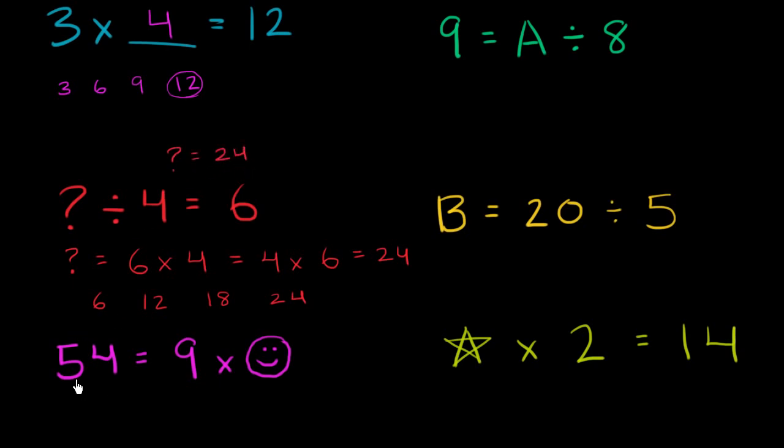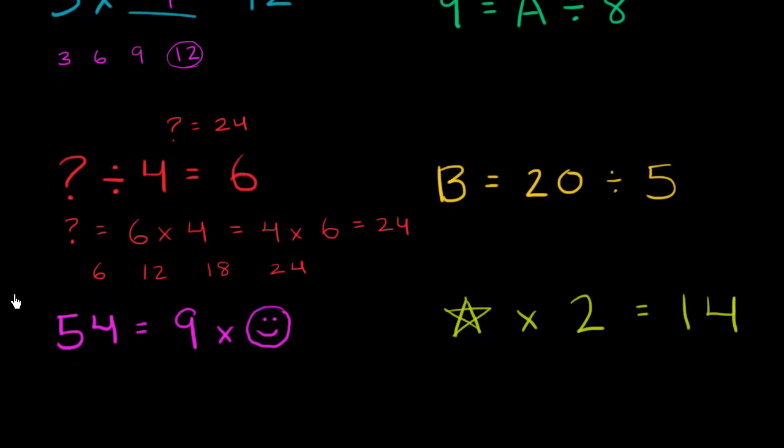Now here I have 54 is equal to 9 times smiley face. So 9 times what is equal to 54? Well, let's just skip count with 9 and try to figure that out. 9 times 1 is 9, 9 times 2 is 18, 9 times 3 is 27. Notice I'm just adding 9 each time. 9 times 4 is 36, 9 times 5 is 45, 9 times 6 is 54.